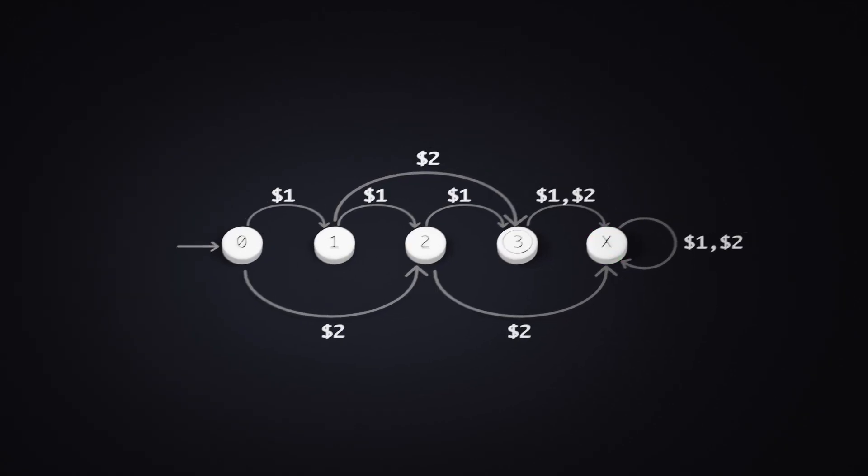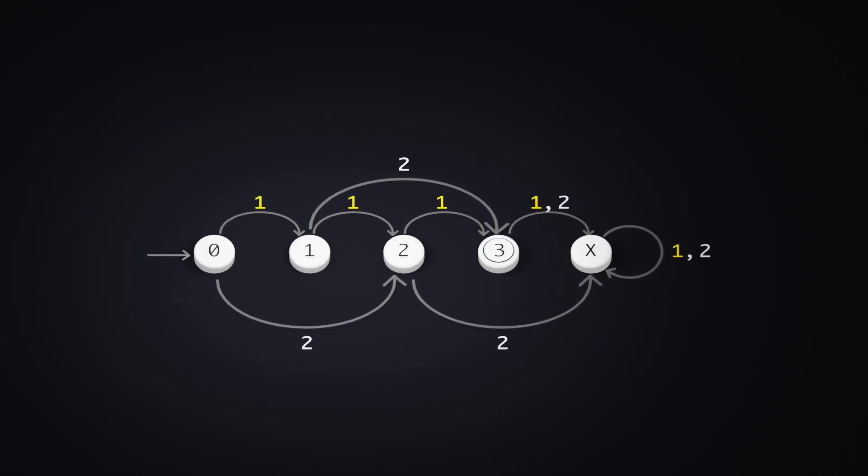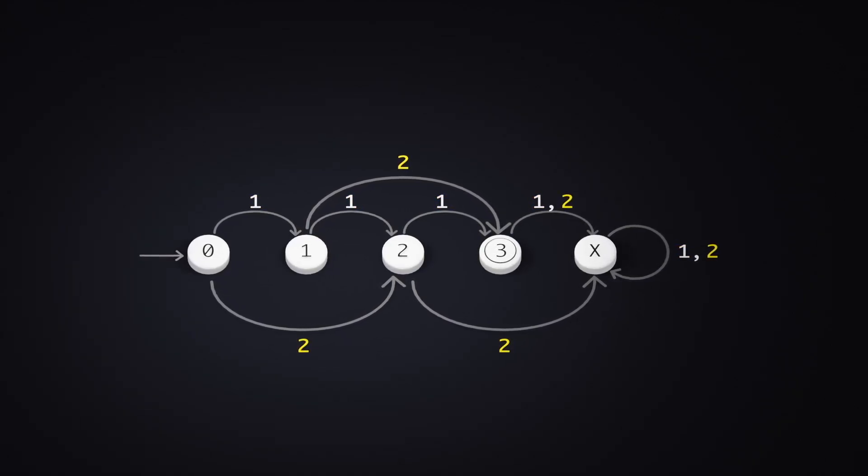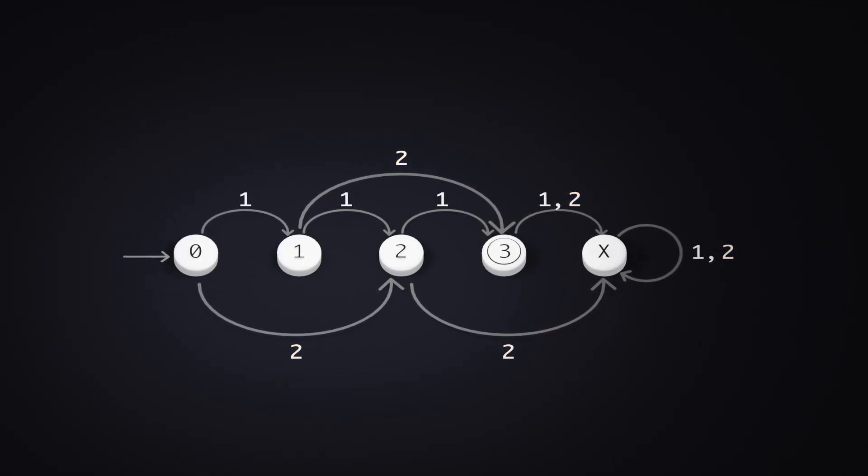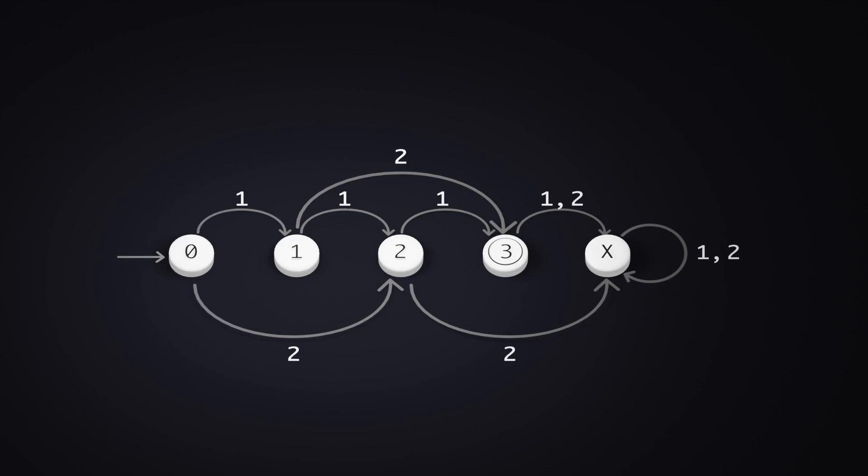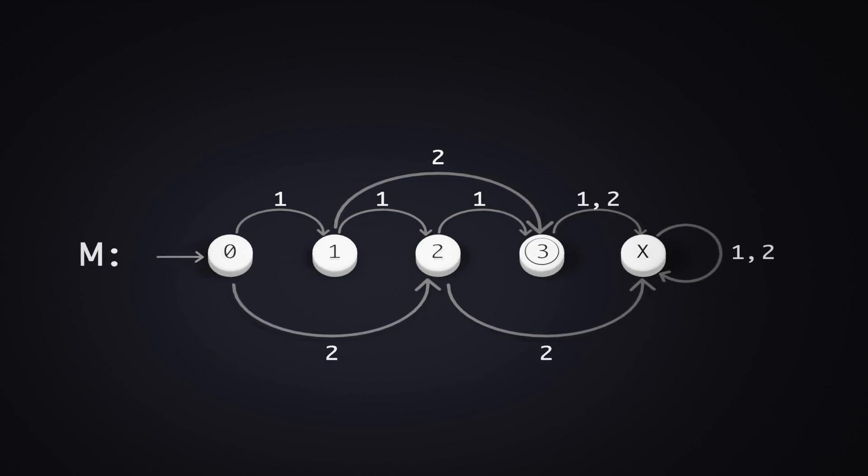To simplify the transition symbols, let us remove the dollar signs and use 1 to indicate that a dollar note has been inserted, and 2 for a $2 note. This will enable us to construct strings that represent our transitions easily. For this machine M, we see that for it to give us a can of coffee, there are 3 ways to do so.